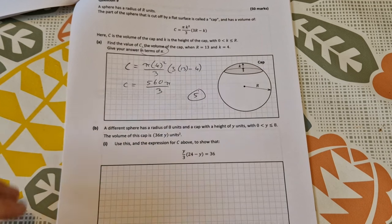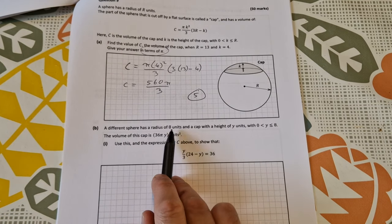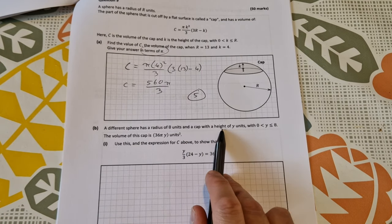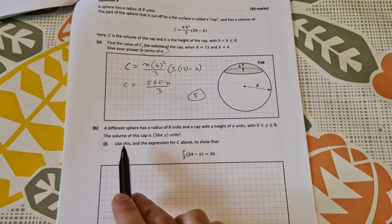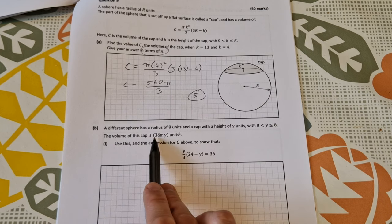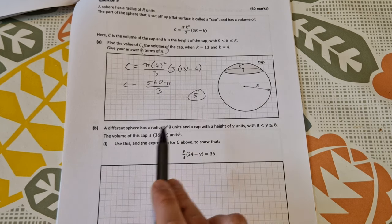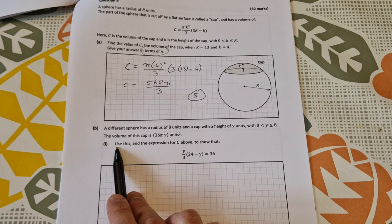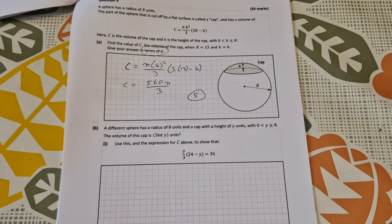Part B. A different sphere has a radius of 8 units and a cap with a height of y units, y is between 0 and 8. The volume of this cap is 36 pi y units cubed. Use this and the expression for c above to show this expression here.